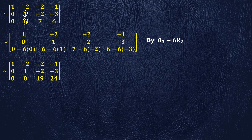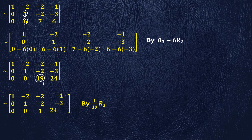Note that the first non-zero element in row 3 is 19. We convert it into 1. For this, we divide row 3 by 19 and we get the transformed augmented matrix of this form. Note that this form is echelon form. So we have successfully converted the given augmented matrix into echelon form by elementary row operations.